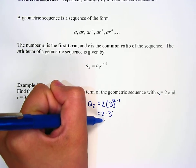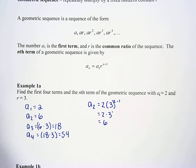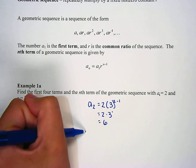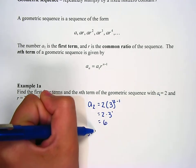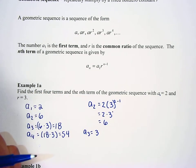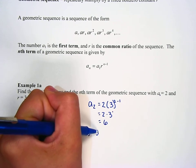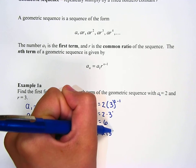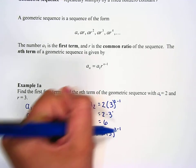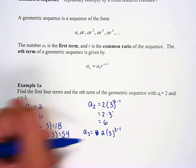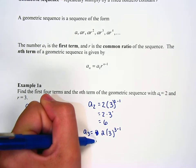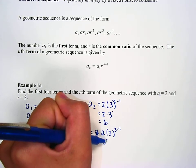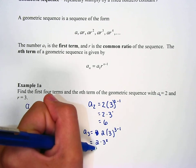Very good. And do the same thing for the third one. So a sub 3 is going to be 2, because that's the first term, 2 times 3 to the 3 minus 1. There you go. And that's going to be 2 times 3 squared, and that's 2 times 9, which is 18.